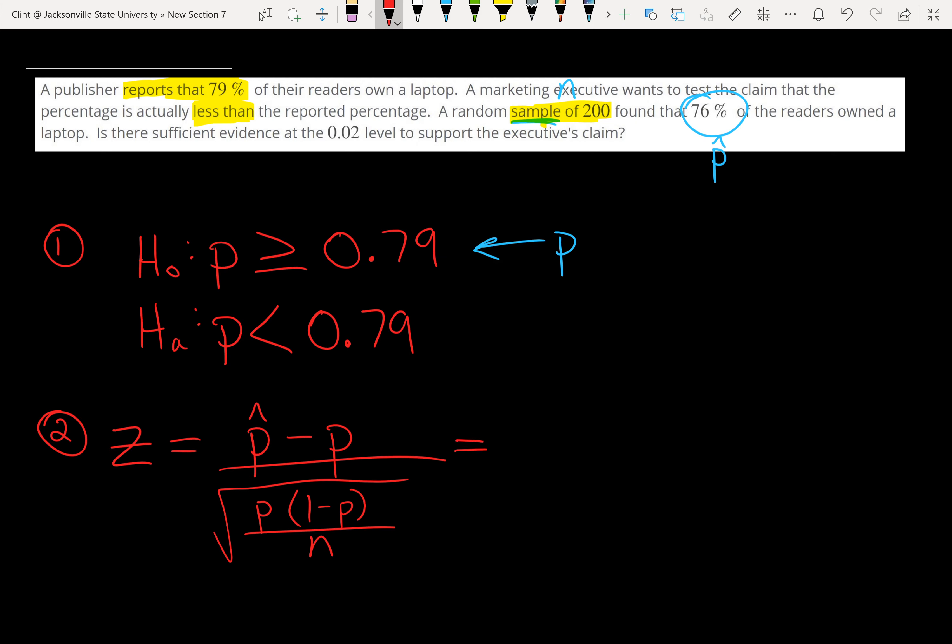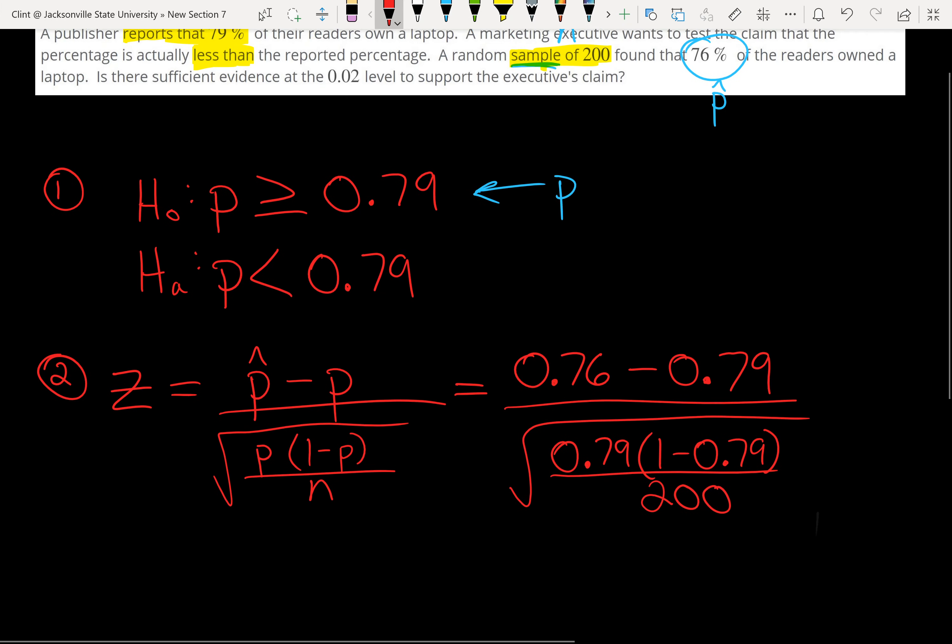Plug in to our formula. We have p-hat, which was 76% or 0.76. Every other p in our formula is going to be 0.79, right? p-hat is only in there once. So minus 0.79 divided by the square root of 0.79 times (1 minus 0.79) divided by 200.